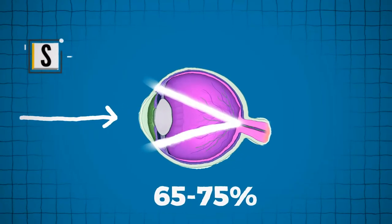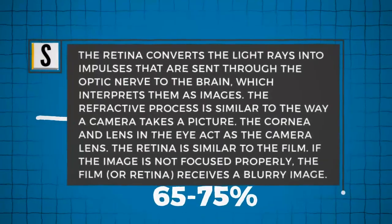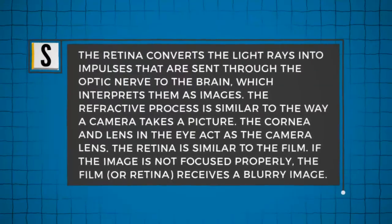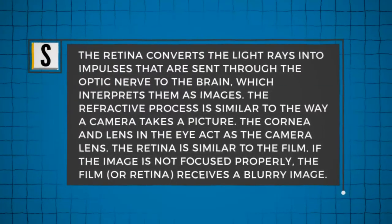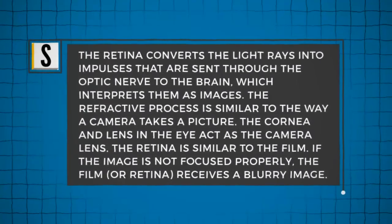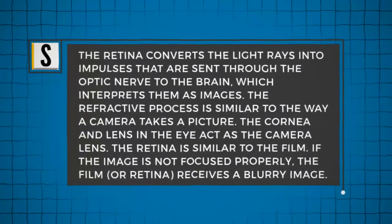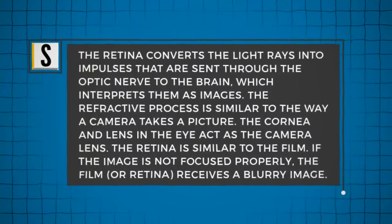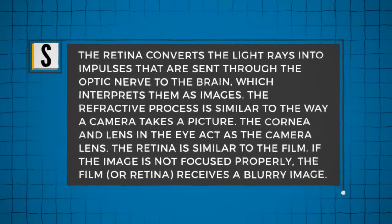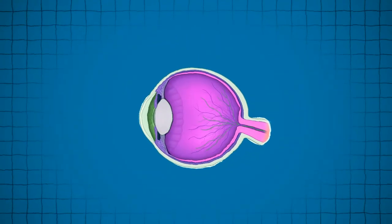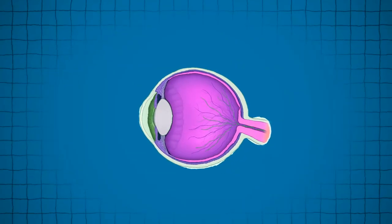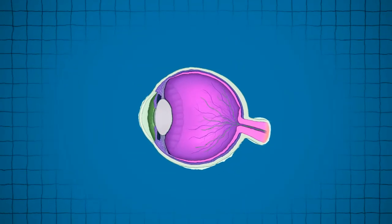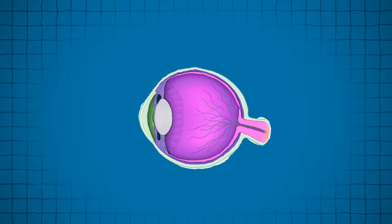For you to see clearly, light rays must be focused by the cornea and the lens to fall precisely on the retina. The retina converts the light rays into impulses that are sent through the optic nerve to the brain. This refractive process is similar to the way a camera takes a picture — the cornea and lens act as the camera lens, while the retina is similar to the film. If the image is not focused properly, the retina receives a blurry image.